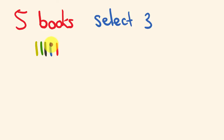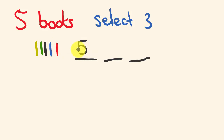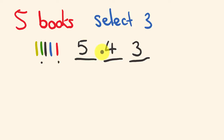So how do I work out how many different ways I could do this? I'll show you the spaces for three books: one, two, three. When I select my first book, I've got five to choose from. I select the first one — say it's the red one — and that leaves me with four books to choose from for the second space. Then it leaves me with three for the third space. To find the number of different ways, I multiply: five times four times three, which equals sixty.